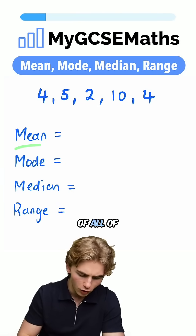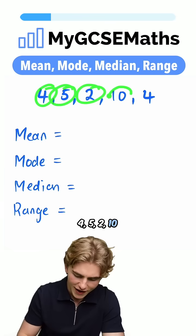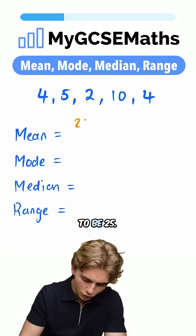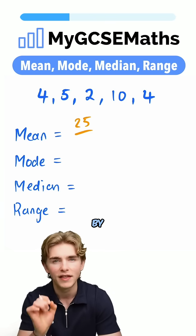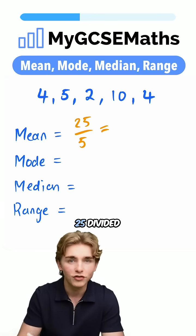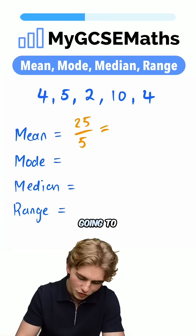We want to find the mean, first of all, of 4, 5, 2, 10, and 4. To find the mean, we're going to add all of the numbers together. That's going to be 25, and we're going to divide it by the number of numbers. There are five numbers here, so divide by 5. 25 divided by 5 is going to be 5.